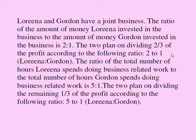The two plan on dividing two-thirds of the profit according to the following ratio 2 to 1. Lorena will get two parts and Gordon will get one part. The ratio of the total number of hours Lorena spends doing business related work to the total number of hours Gordon spends doing business related work is 5 to 1. The two plan on dividing the remaining one-third of the profit according to the following ratio 5 to 1. Lorena gets five parts, Gordon gets one part.